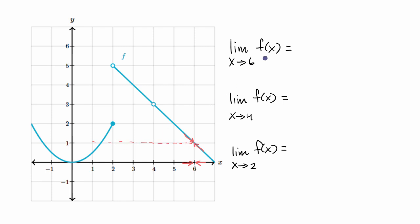In order for this limit to exist, we need to be approaching the same value from both the left and the right-hand side. And so here, at least graphically — you're never sure with a graph — but this is a pretty good estimate: it looks like we are approaching one.